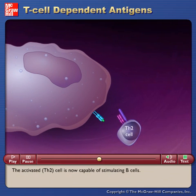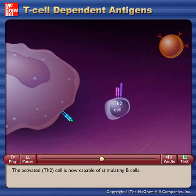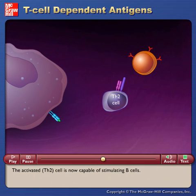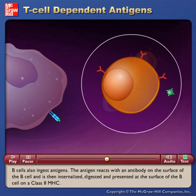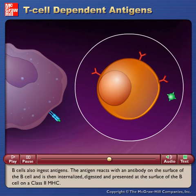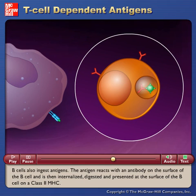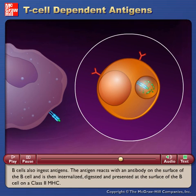The activated Th2 cell is now capable of stimulating B cells. B cells also ingest antigens. The antigen reacts with an antibody on the surface of the B cell and is then internalized, digested, and presented at the surface of the B cell on a class 2 MHC.